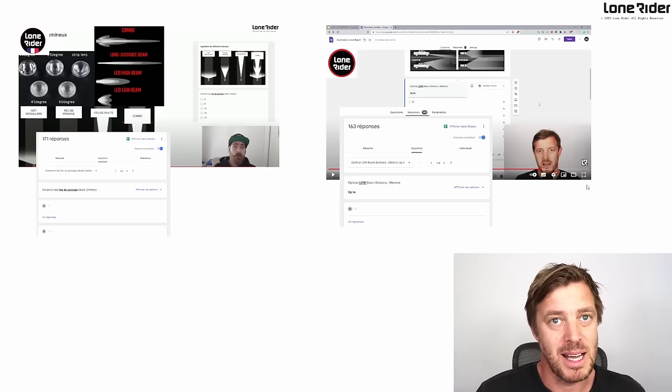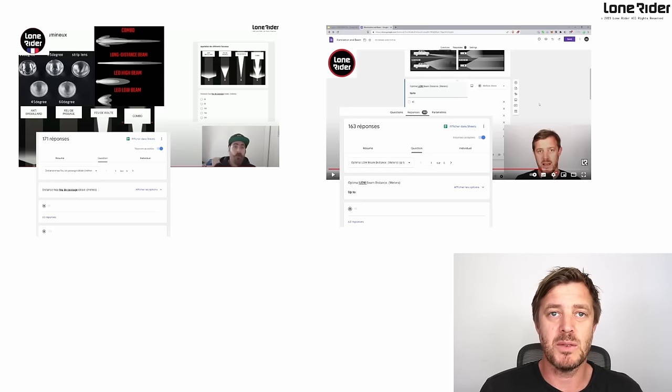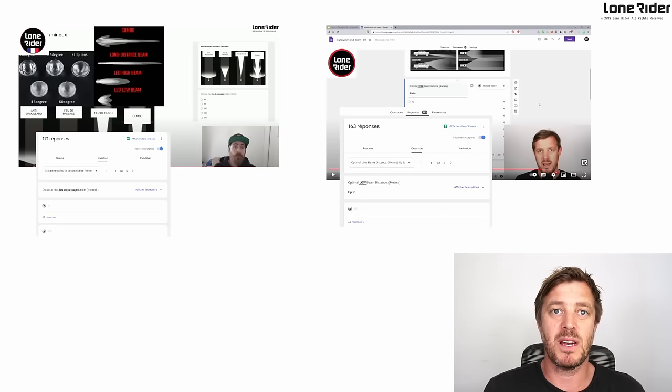A couple weeks ago we made a video and asked specifically what you wanted in the actual light signature - how far off the road, how far in low beam, high beam, spot, all this kind of stuff. We asked you guys what you wanted and to fill out a form. We got quite a few results back, about 400 results from the French channel and the international channel. We asked exactly what you wanted and we got a good number of responses not only on this form but from forums and email as well. So we crowdsourced all that information and started from this point to design the perfect light.